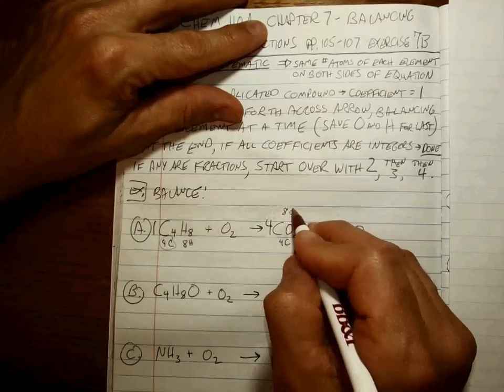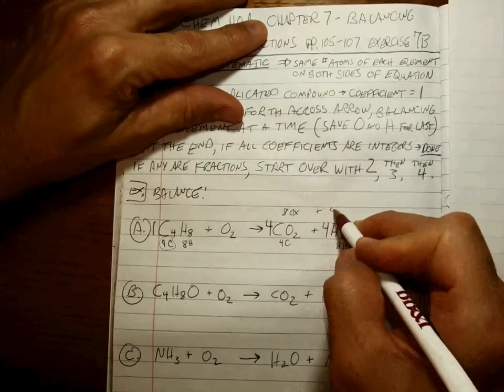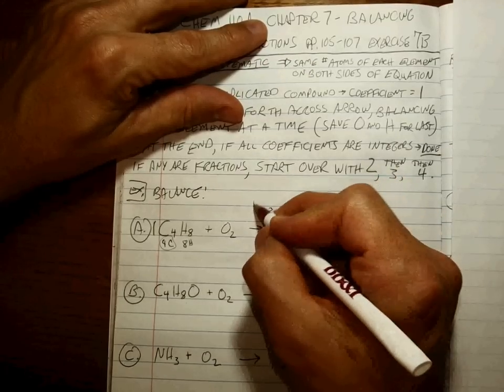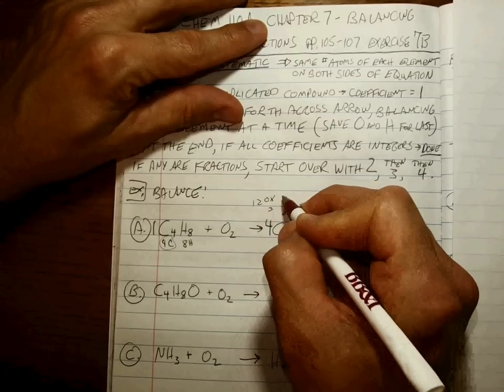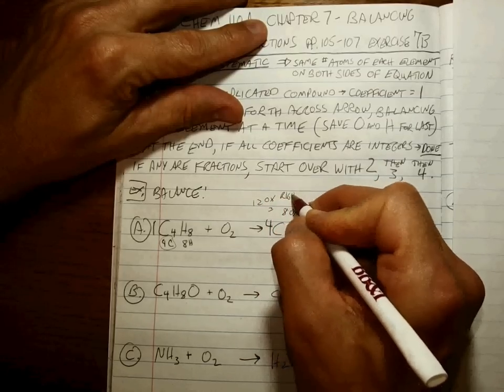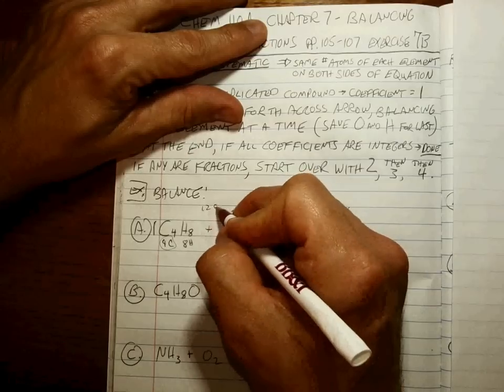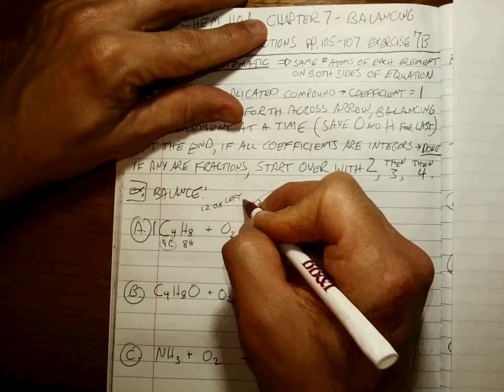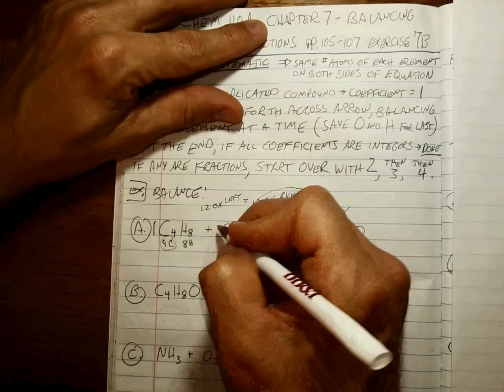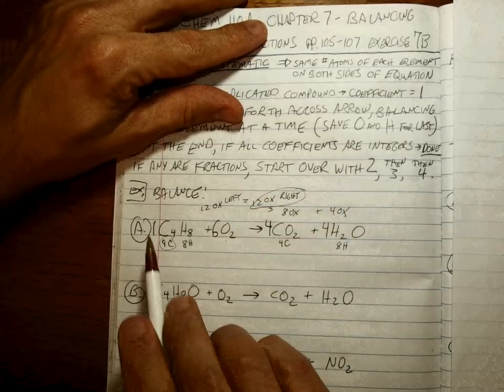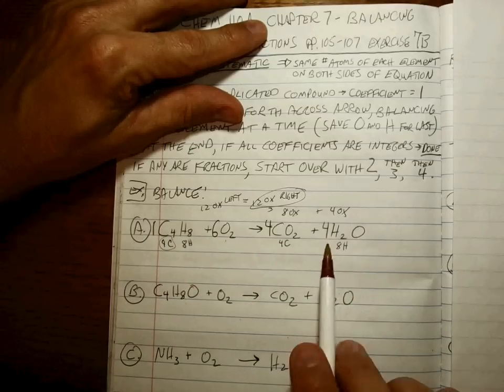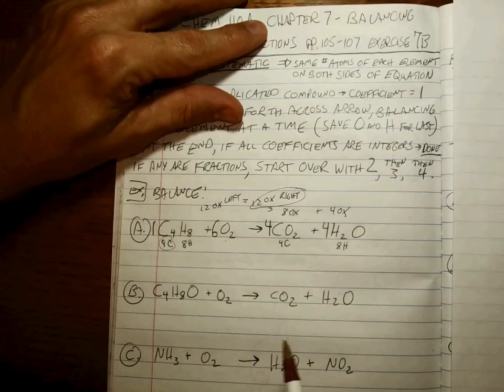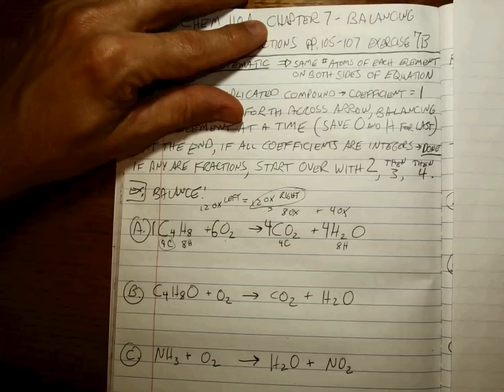This is 4 times 2, or 8 oxygens. This is 4 oxygens. So what's 8 plus 4? That's 12 oxygens on the right. So to get 12 oxygens on the left to get them balanced, that coefficient needs to be a 6. Everybody's a counting number coefficient, so we're done. That's the balanced equation.